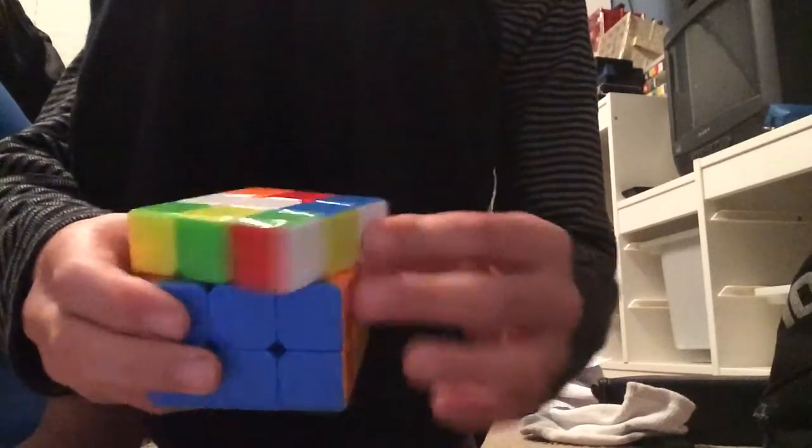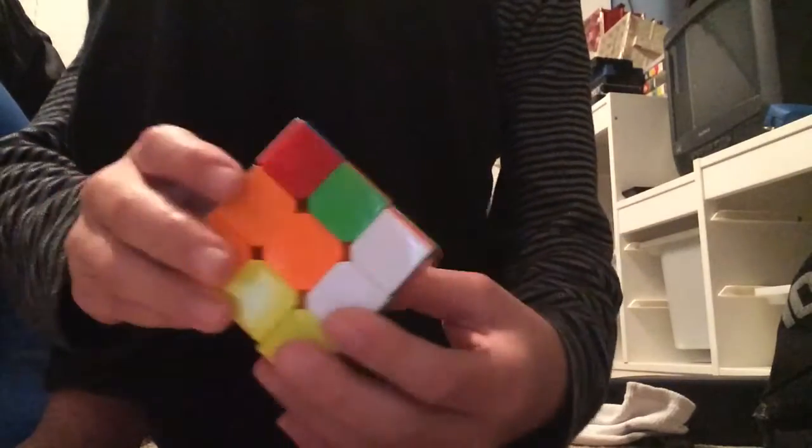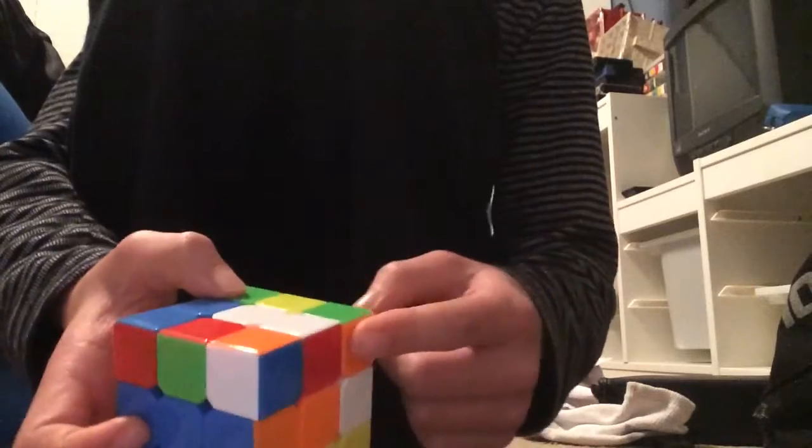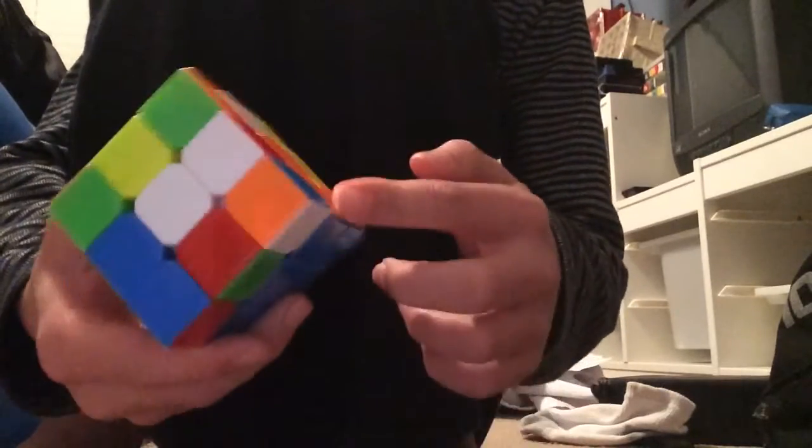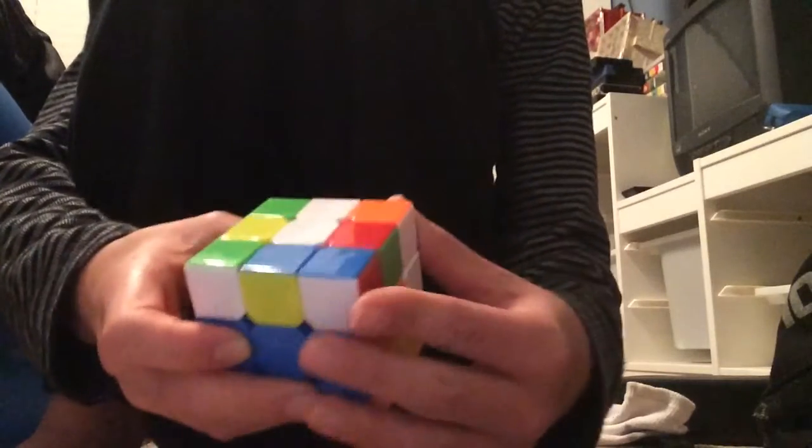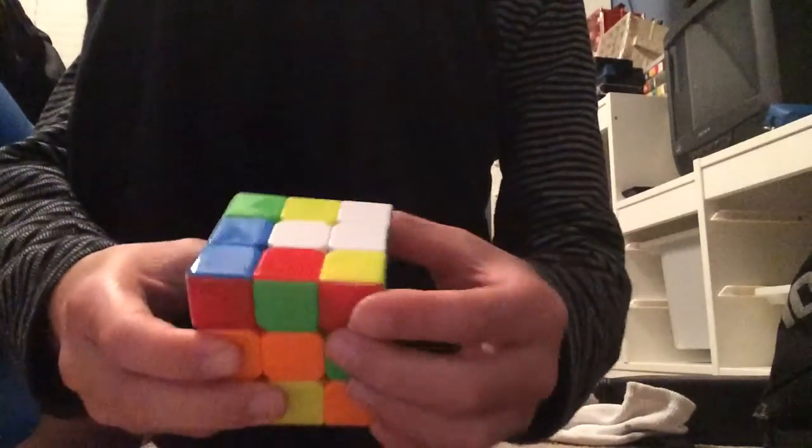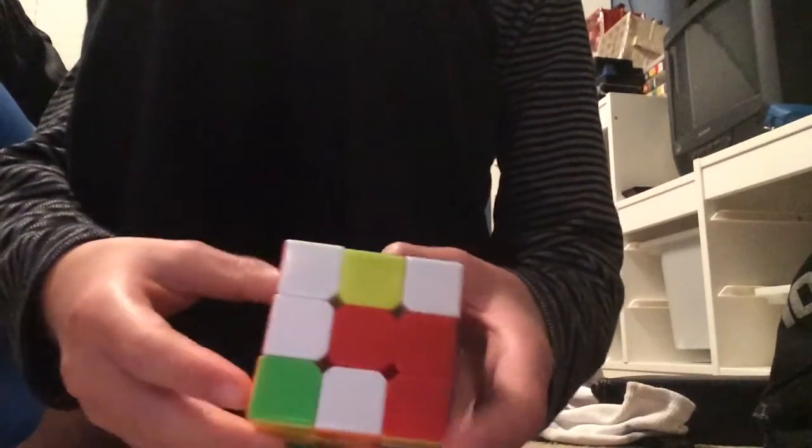You want to get that edge, see if it lines up. In this case it does not, which is okay. Then after that you just want to find the edge piece. Here's an edge piece right here. You want to try to find points where you can do it without messing the cube up.